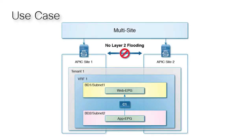This Cisco ACI multi-site use case is similar to the previous one, where a tenant, VRF, and their EPGs with their bridge domains and subnets are stretched between sites. However, in this use case, layer 2 broadcast flooding is localized at each site. Layer 2 broadcast, multicast, and unicast traffic is not forwarded across fabrics over replicated VXLAN tunnels.